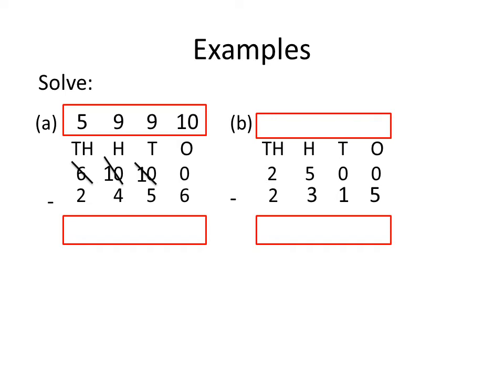Now, subtract it. First, we subtract the 1's place digit. So, 10 minus 6 is 4. Now, we subtract the 10's place. So, 9 minus 5 is 4. Now, we subtract the 100's place. So, 9 minus 4 is 5. Now, we subtract the 1000's place. So, 5 minus 2 is 3. The answer is 3544.